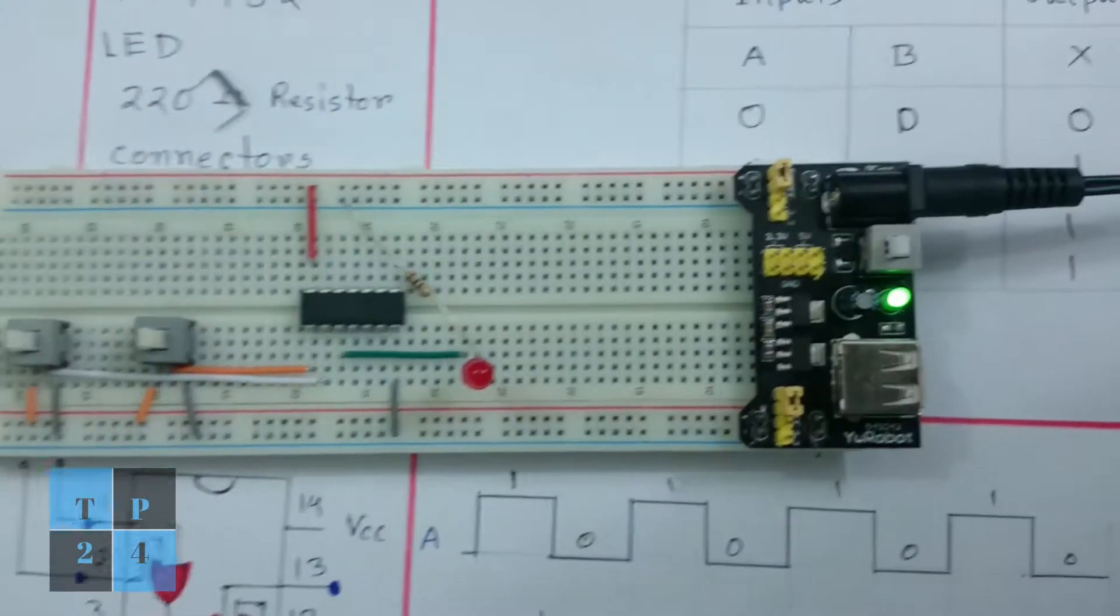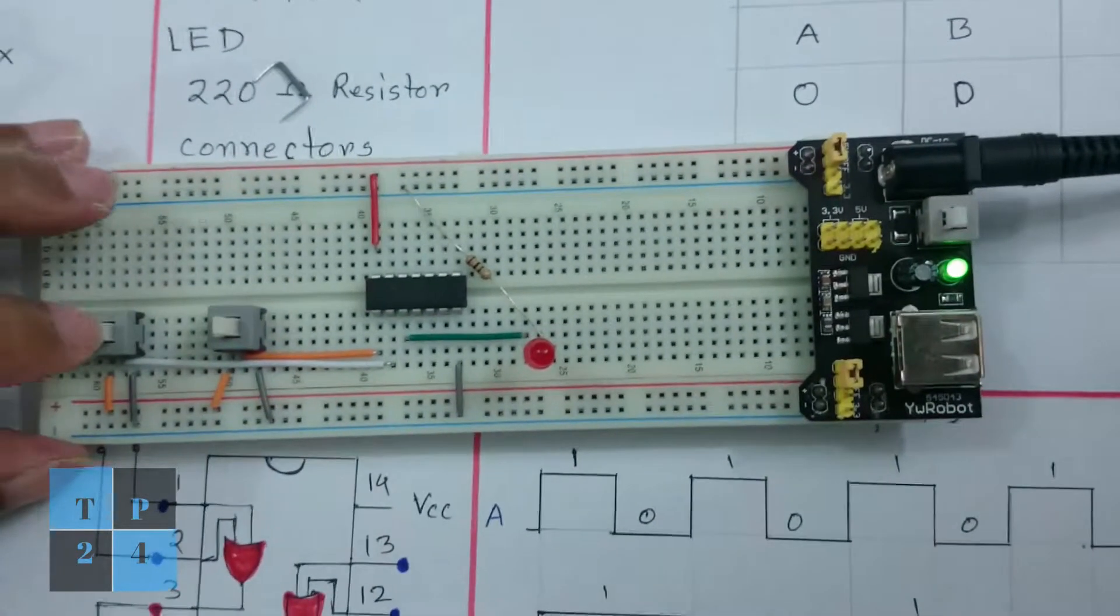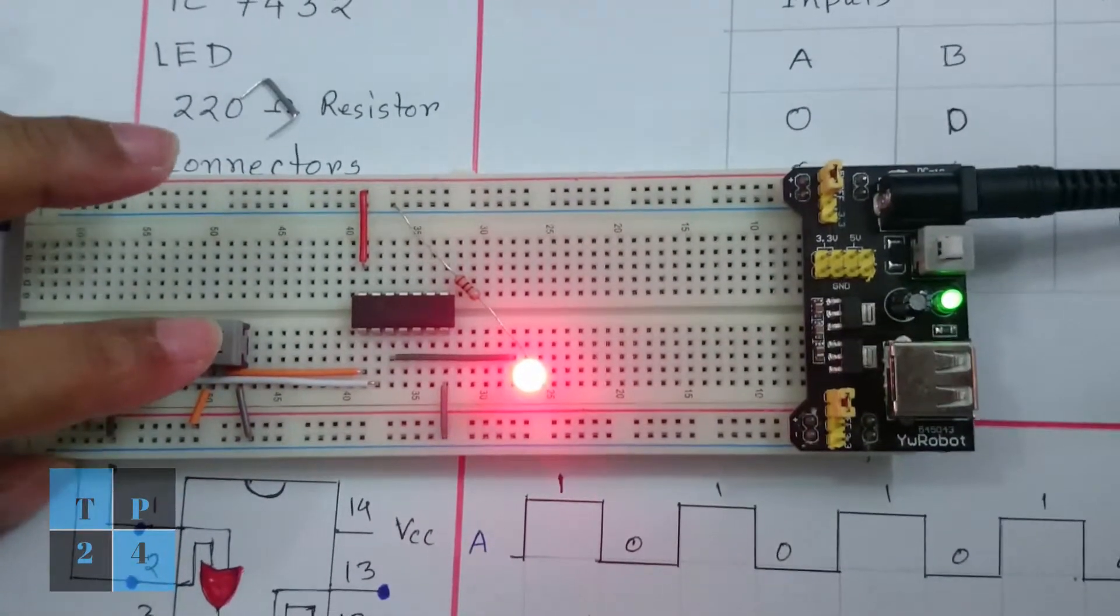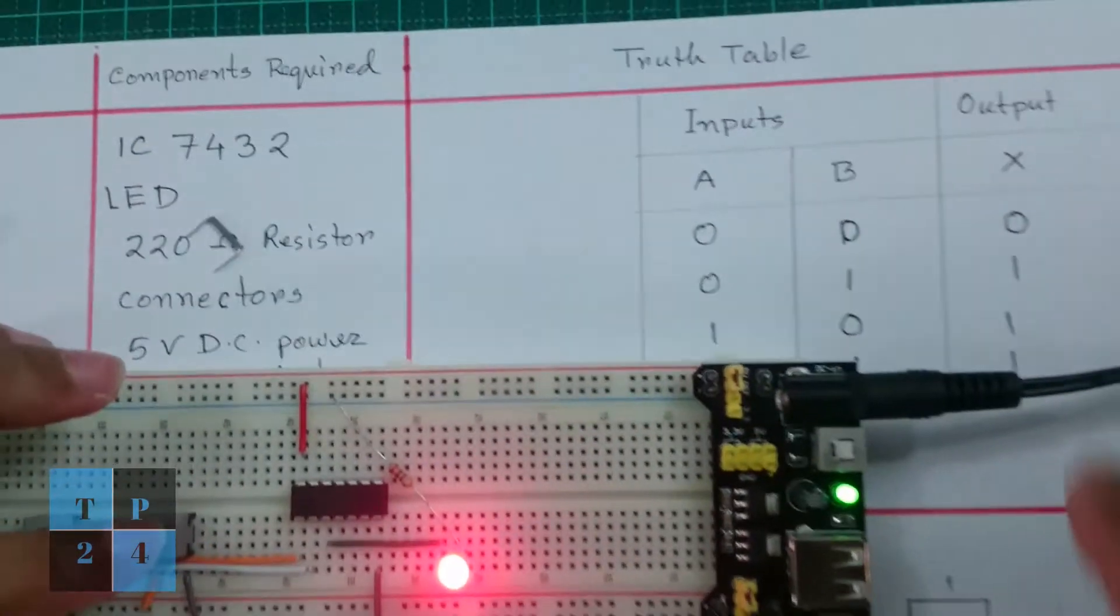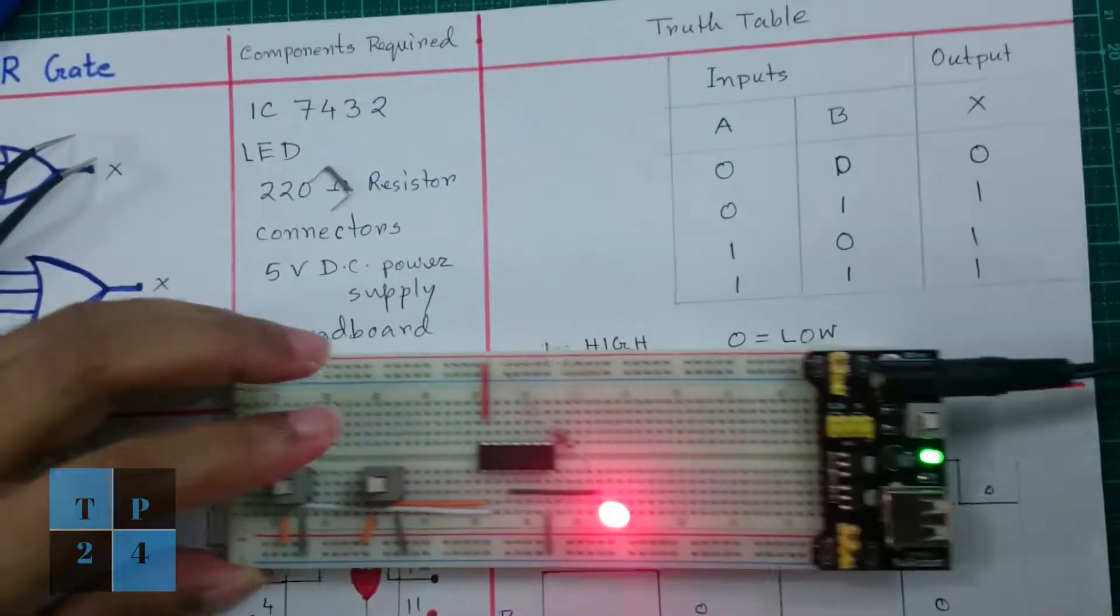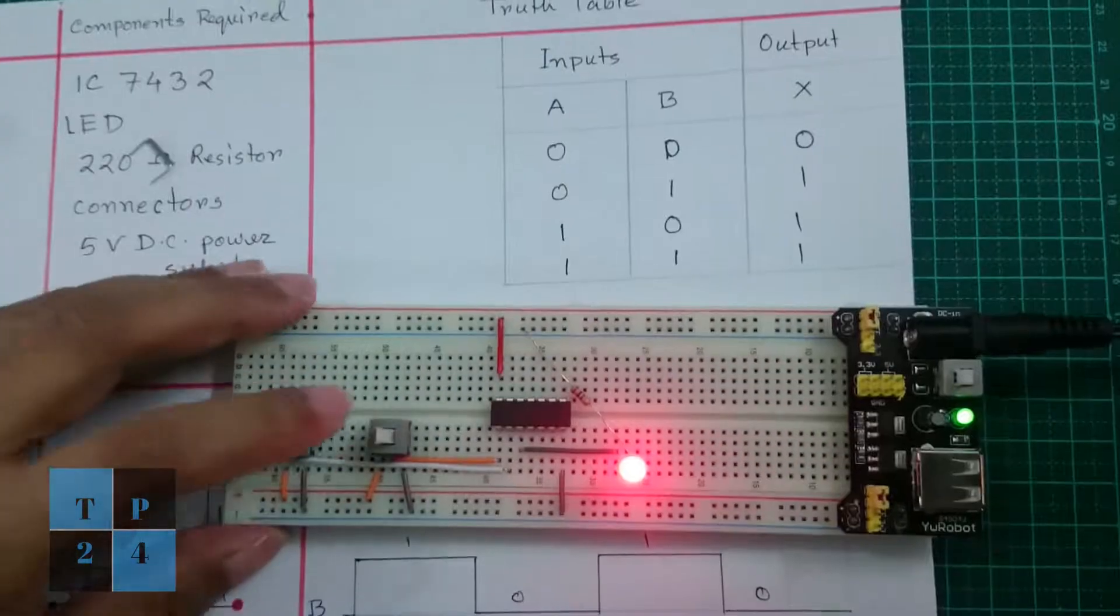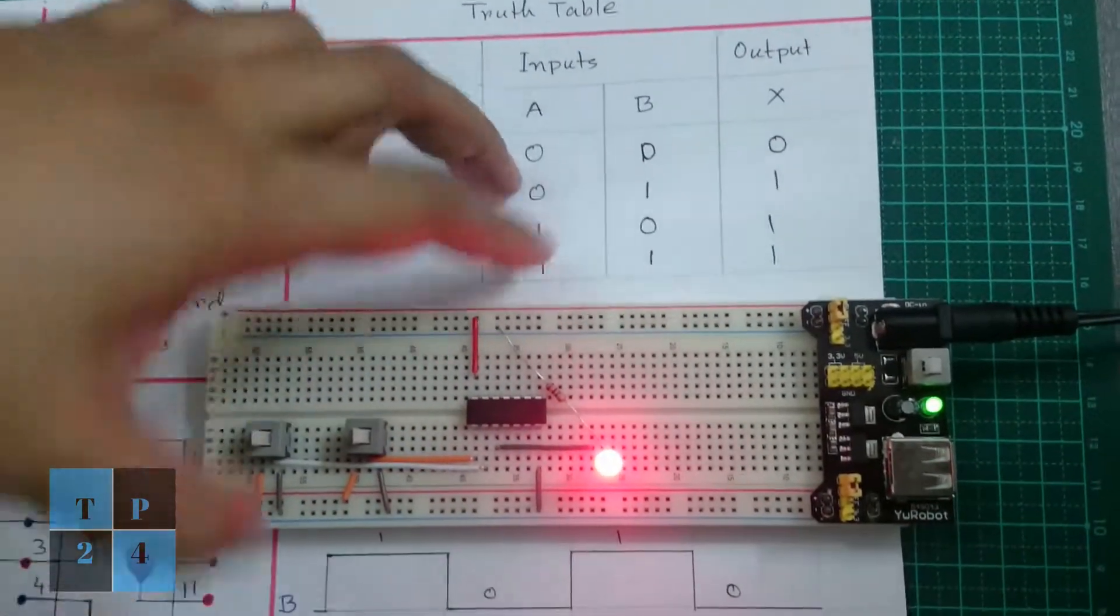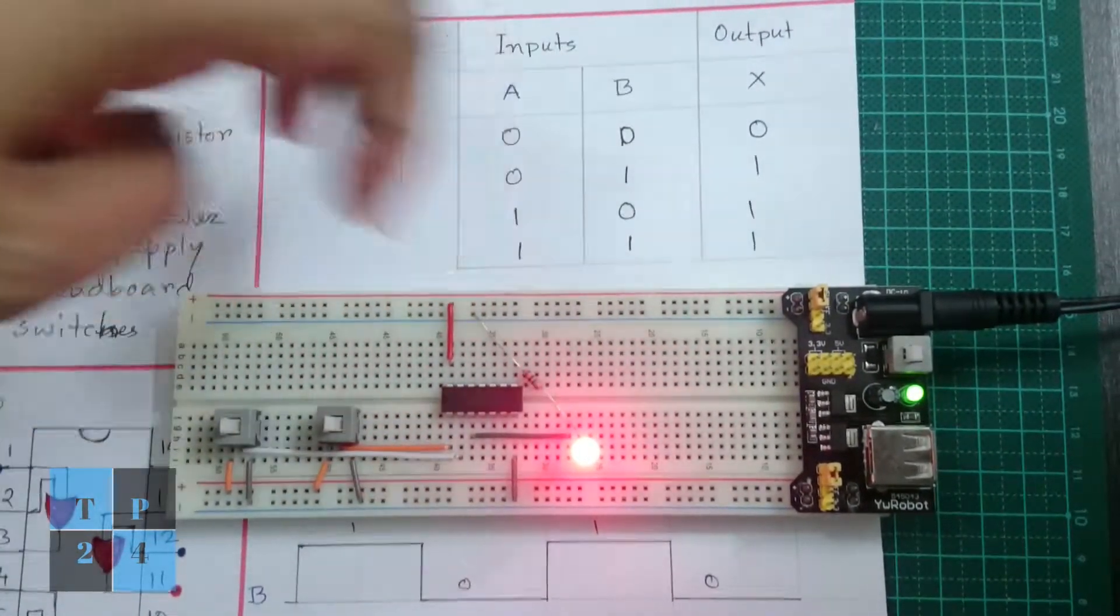So I put two switches here and I am going to connect the power supply and turn on the switch, and I am going to push the button. So this is 1, and this is 0, I did not push it. So 1 and 0 is 1, so the LED is blinking. If I push here, that means 1 and 1, both are high and output is high, and it is blinking.